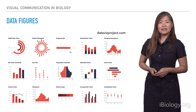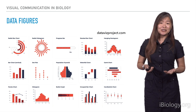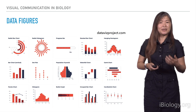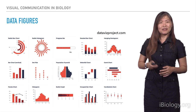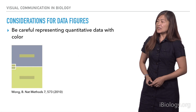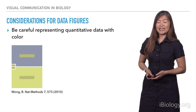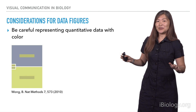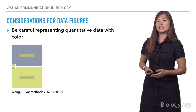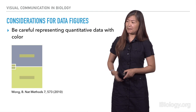Next we're moving on to data figures. Data visualization is a large field, and we're really just going to scratch the surface. I'm going to talk about some of the main recommendations — the biggest problems people see in biology data visualizations. One of the things that data visualization experts recommend is really being careful with how we use color, and specifically using color to represent quantitative data, because the way we perceive color is really not on an absolute scale — it's on a relative scale.